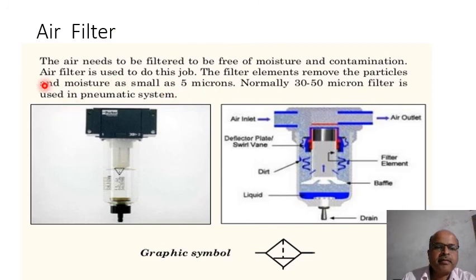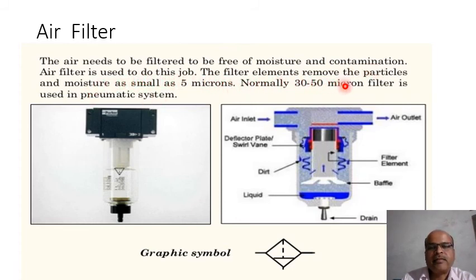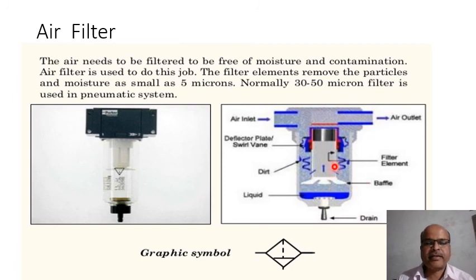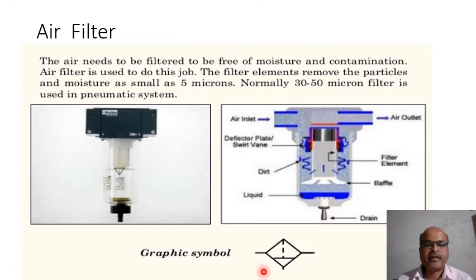Air needs to be filtered to be free from moisture and contamination. The filter element removes particles and moisture as small as 5 microns. Normally a 30 to 50 micron filter is used in a pneumatic system. This is the air filter structure as shown in the diagram — air inlet, air outlet, filter element, liquid collected at the downward side, drain, and the graphical symbol of the air filter.